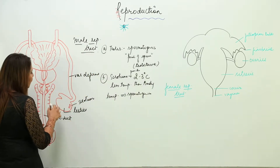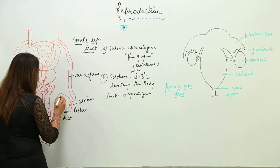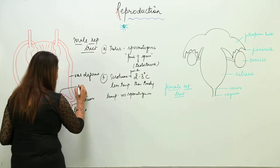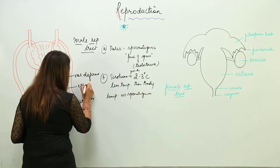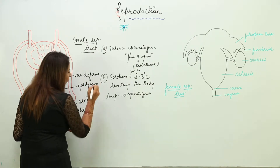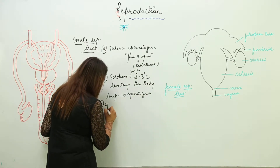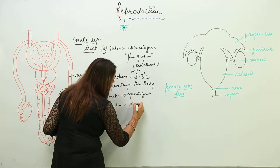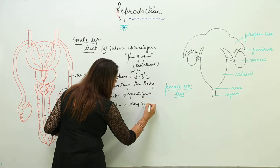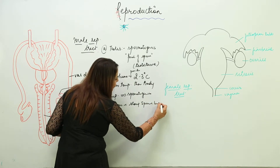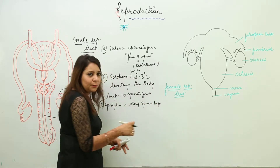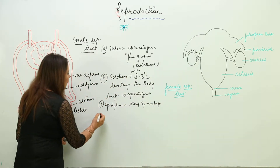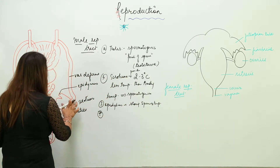The sperm which is produced is stored in the epididymis. The epididymis helps in storing sperms temporarily. As the testes are producing sperms, the epididymis is storing them temporarily.